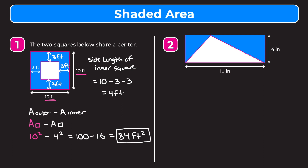In example two we have a rectangle with a white triangle pulled out of it, and we want to find the area of this blue shaded region. Conceptually we're going to do the same thing: we need the area of the outer shape minus the area of the inner shape. This time our outer shape is a rectangle, so it's the area of the rectangle minus the area of the triangle.